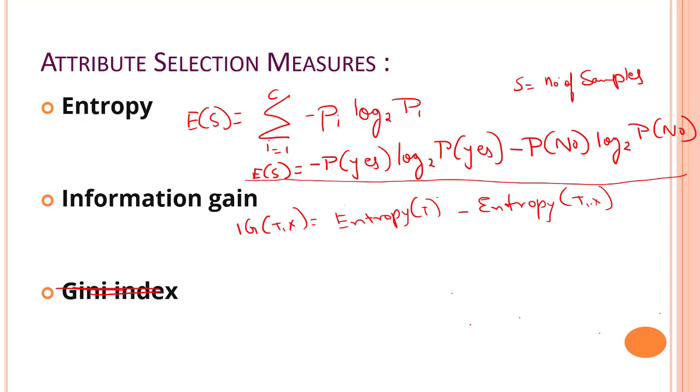Now let's just simplify the formula. We can write this as IG is equal to entropy of S minus the weighted average into entropy of all the features. That will give me the information gain.